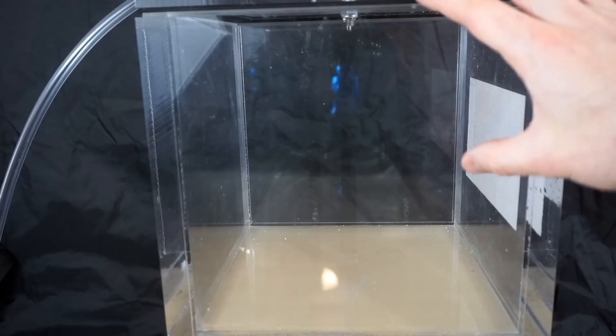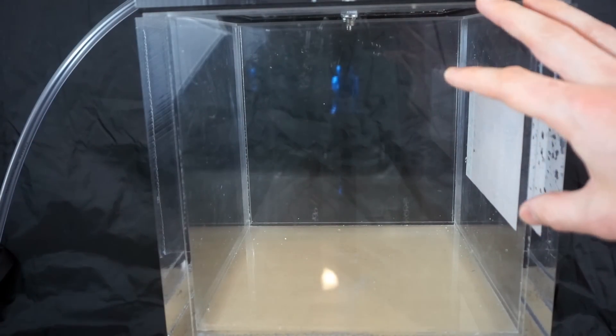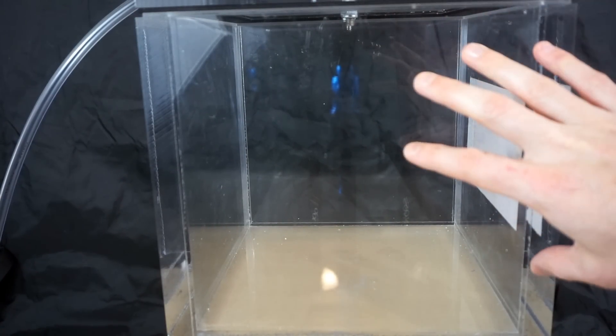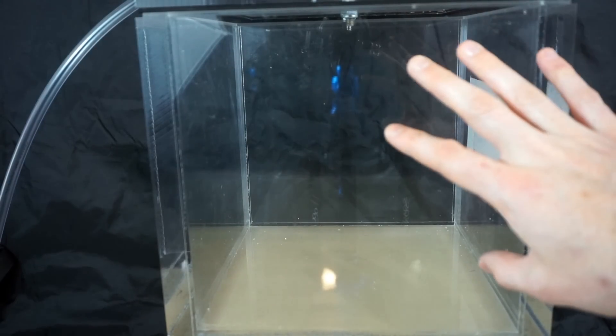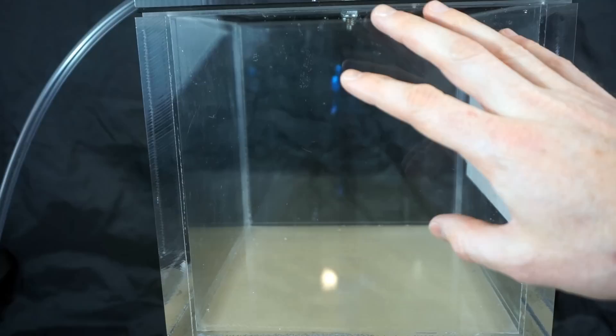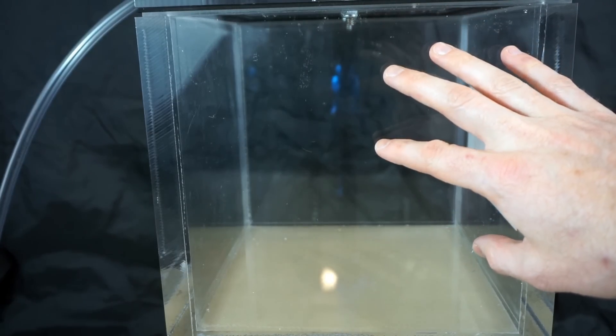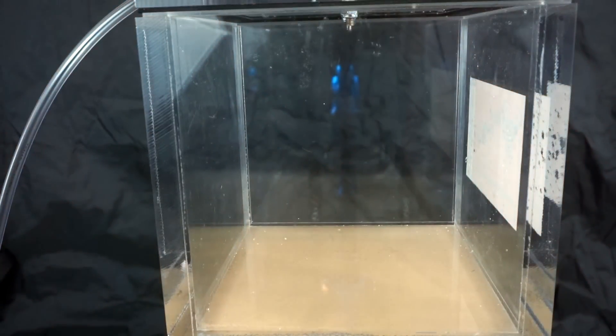So I modified my vacuum chamber to allow me to put in high pressure also to about one atmosphere. So with this chamber I can either reduce it by one atmosphere or increase the air pressure by one atmosphere, so I'll be adding in compressed air.